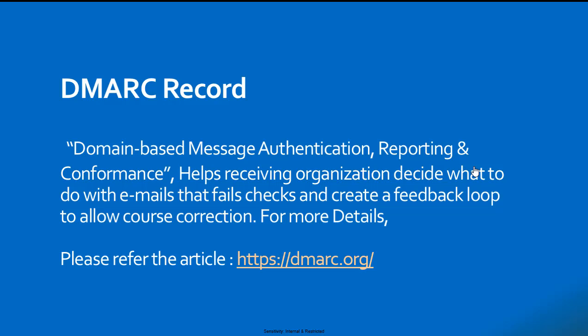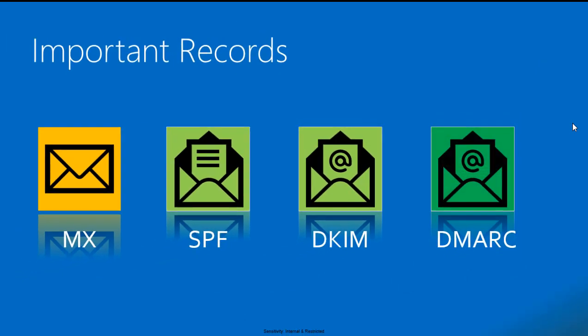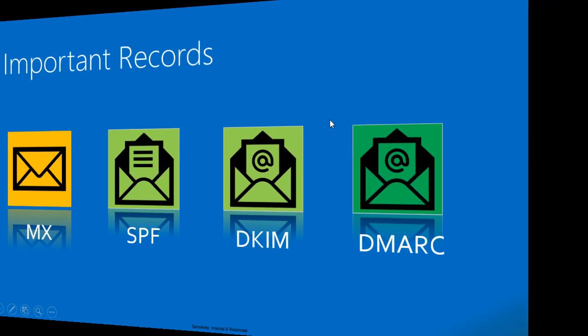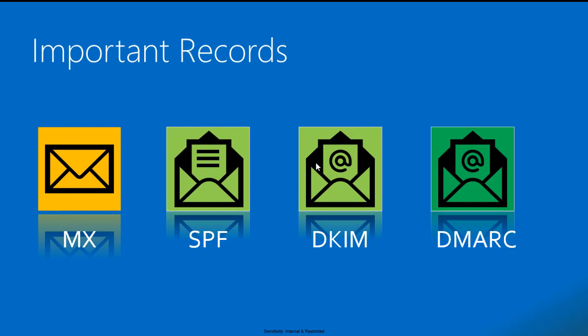In the modern messaging infrastructure, we need all three of these records to avoid spamming and phishing attacks. Considering that you have all the records properly configured, let us now start discussing inbound mail flow and how it works.